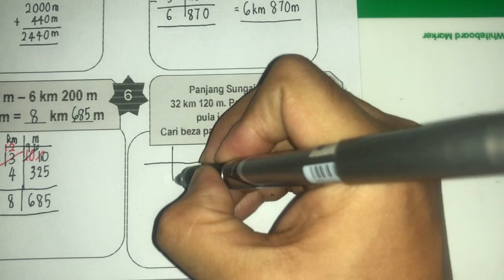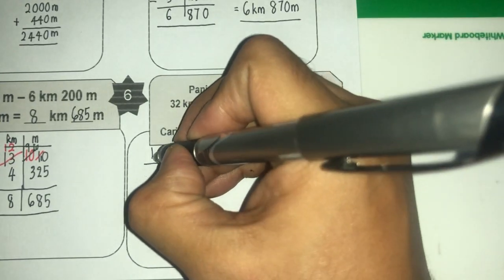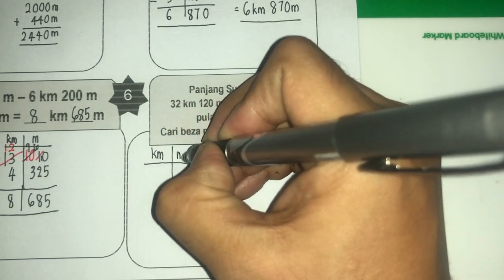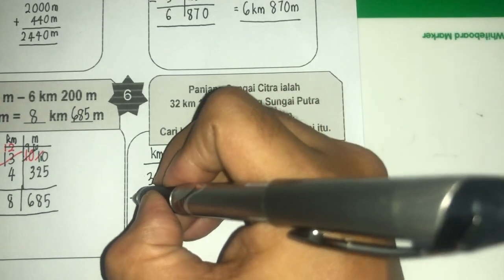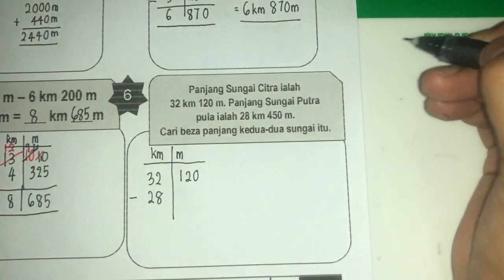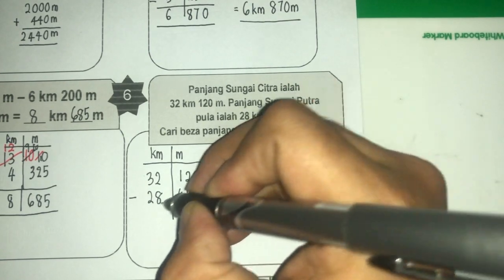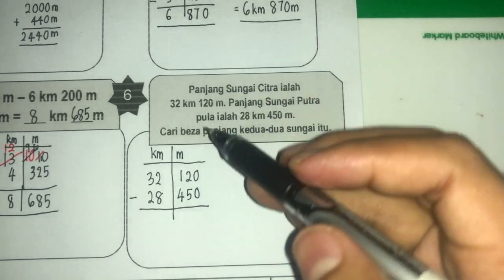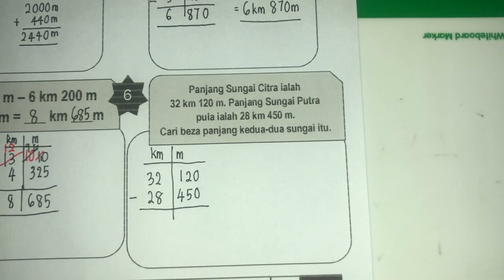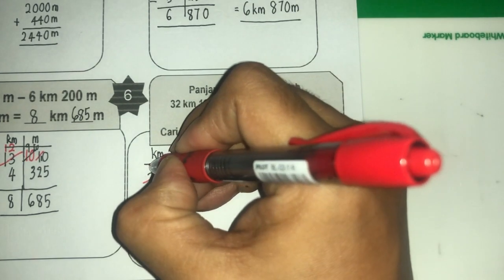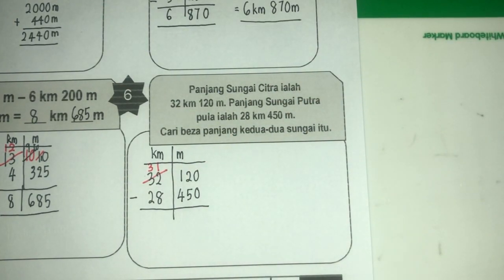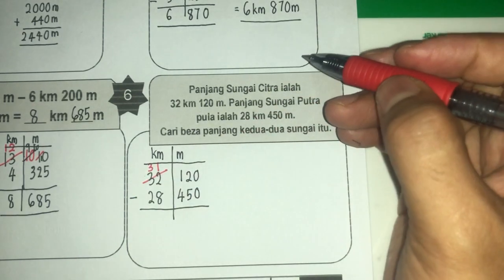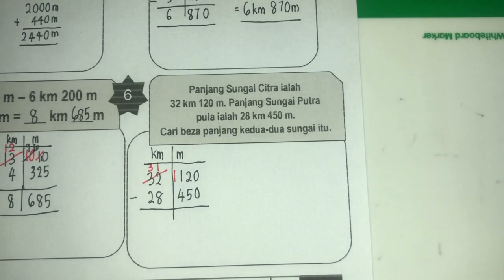Kita buatlah bentuk lazim dia. Unit dia tak cakap nak alami unit apa, jadi kita bebas. Kita buat sekali je. 32 km 120 meter tolak dengan 28 km 450 meter. Sekarang 120 tolak 450 tak boleh. Kita kena buat peminjaman — pinjam daripada 32 jadi 31. Satu kilometer tu bertukar jadi seribu. Seribu tambah 120 ialah seribu seratus dua puluh.